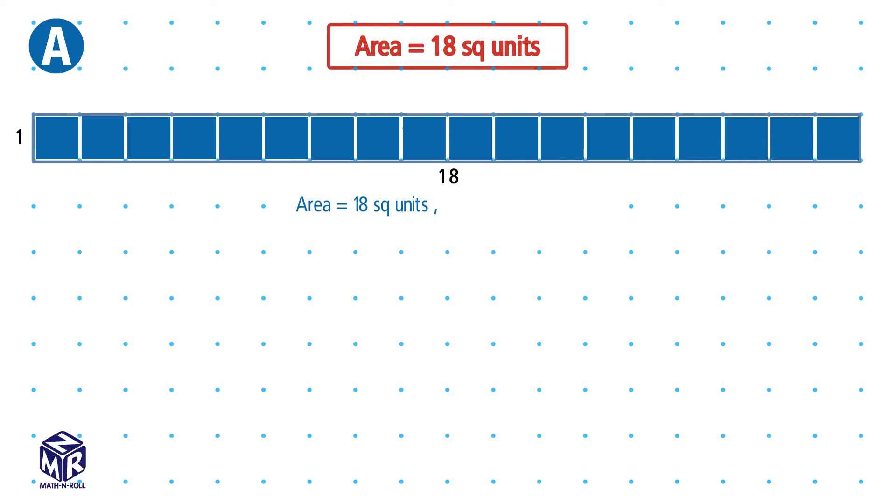Now let's find the perimeter of the rectangle. We add the sides. 1 plus 1 plus 18 plus 18 equals 38 units. So rectangle A has an area of 18 square units and a perimeter of 38 units.